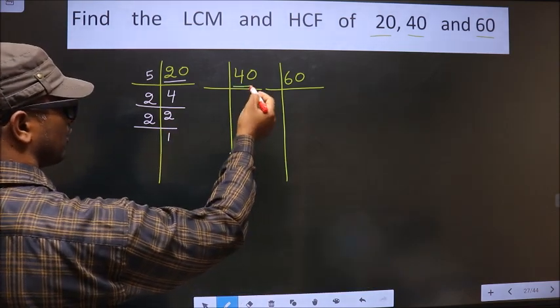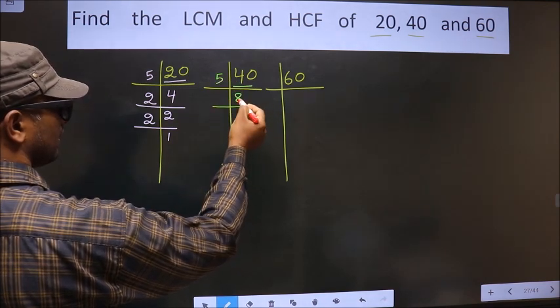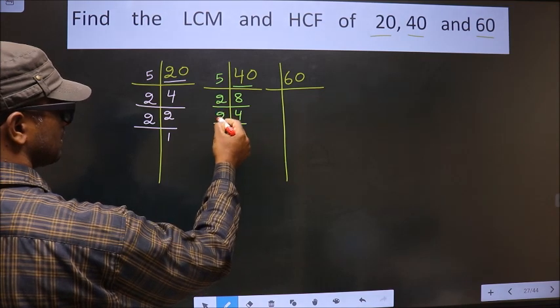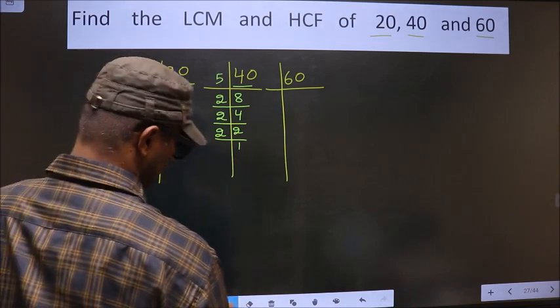Now here we have 40. 40 is 5 times 8. 8 is 2 times 4. 4 is 2 times 2. 2 is a prime number, so we take 2 times 1.